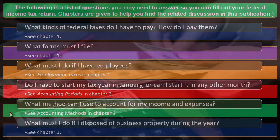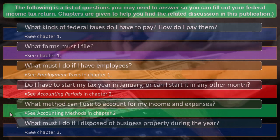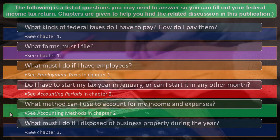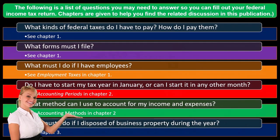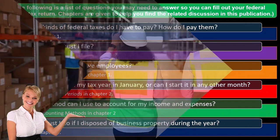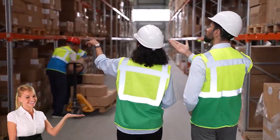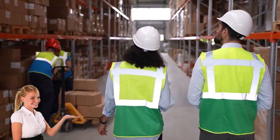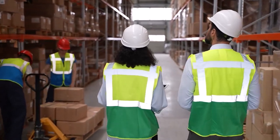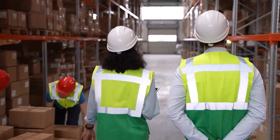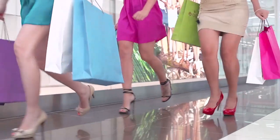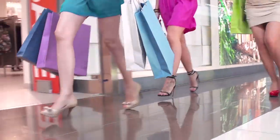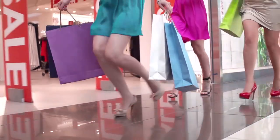We'll dive into that more later. You can see more in the publication for Chapter 2. Now, what must I do if I disposed of business property during the year? Business property here — we're not talking about inventory or services sold in the normal course of business. We're talking about selling a piece of machinery, a forklift, or something like that — a fixed asset. We may look at that later, and you can jump to Chapter 3.